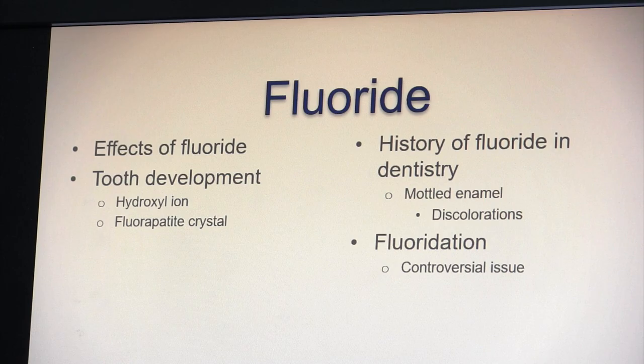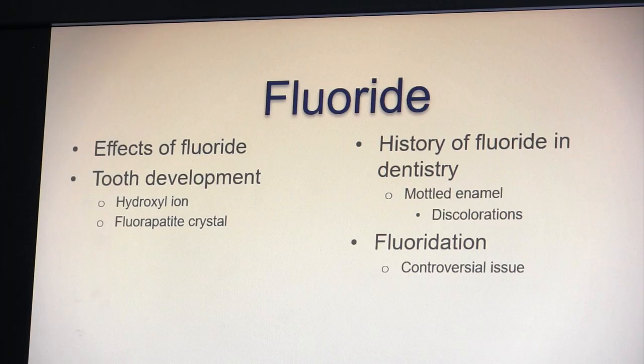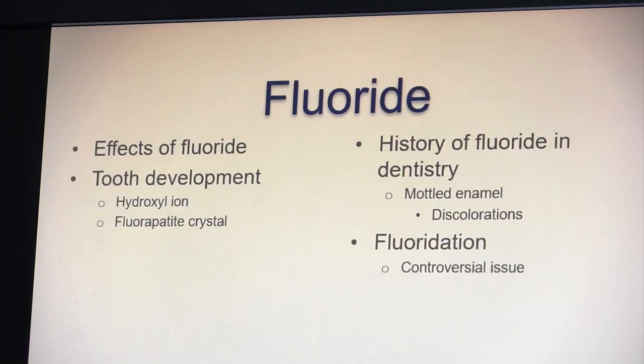Some communities like Claremore have less fluoridated water than others like Tulsa. People on well water will not have fluoride, and in that case parents should get fluoride drops from the pediatrician for baby bottles, since fluoride is very important for developing teeth and bones. It is more important for a child to get fluoride than an older person. Fluoride affects the tooth both during pre-eruption and post-eruption.